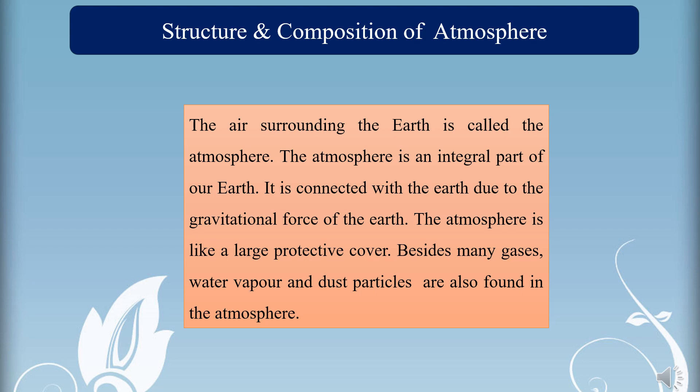Earth is a unique planet because life is found only on this planet. Air has a special place among the conditions necessary for life, and the air is a mixture of several gases. It encompasses the Earth from all sides. The air surrounding the Earth is called the atmosphere. The atmosphere is an integral part of our Earth, connected with the Earth due to the gravitational force. It helps in stopping the ultraviolet rays harmful for life and maintains the suitable temperature necessary for life. Air is essential for the survival of all forms of life on Earth; we cannot imagine any kind of life in the absence of it.